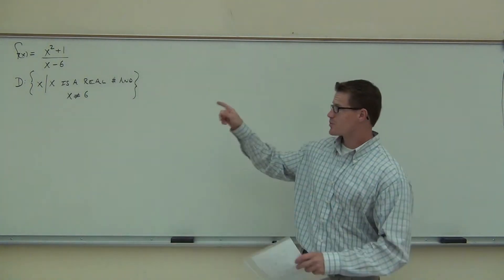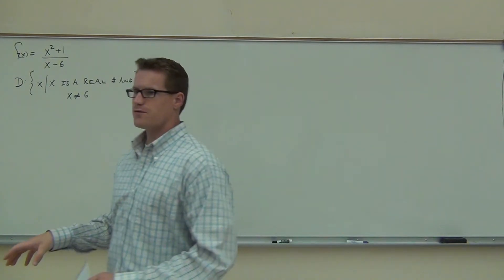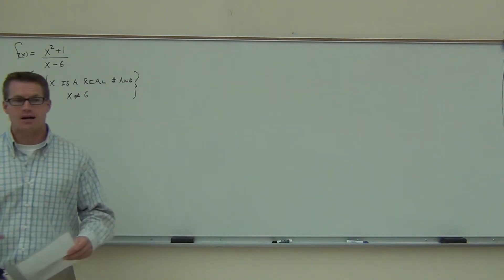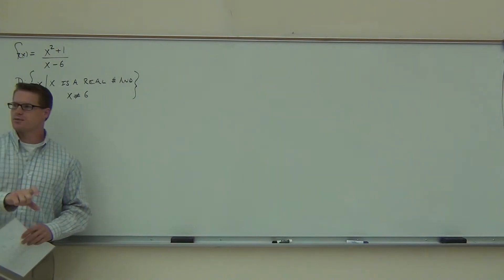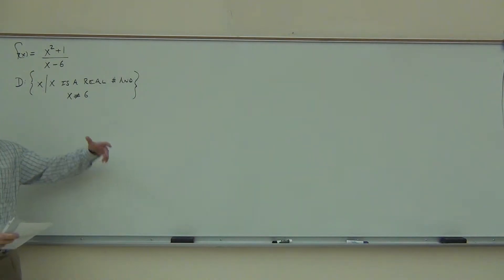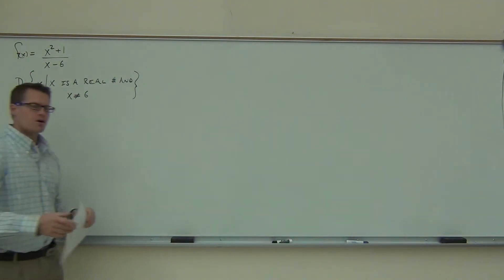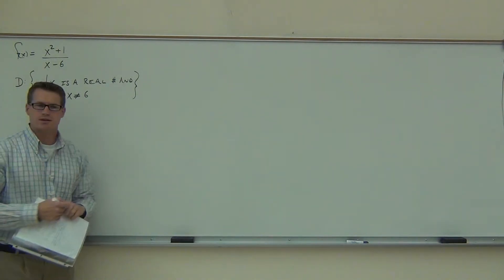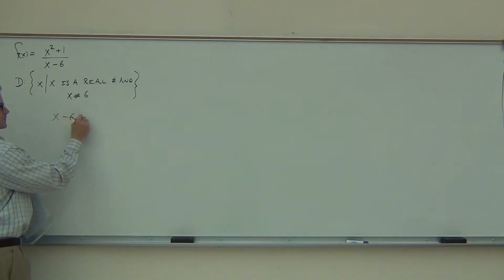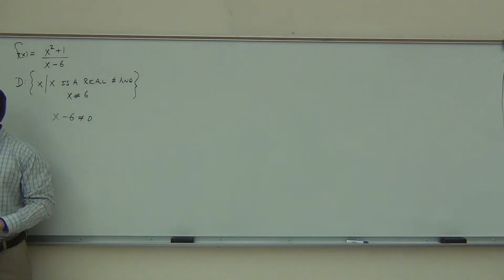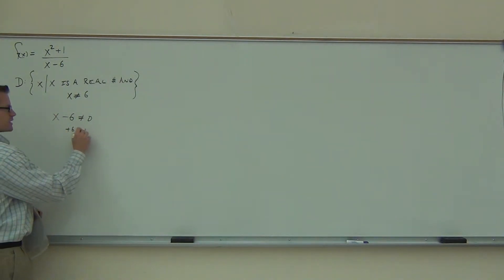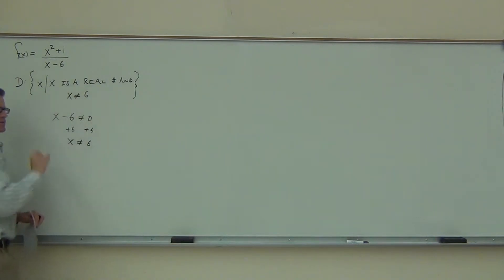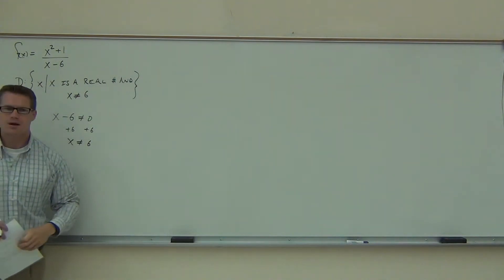If you remember from yesterday, we said that domain is really all the numbers that I can plug into a function and get something valid out — pretty much anything that's not undefined. There's one thing with fractions that we cannot have, and that's zero on the denominator. When we look at the problem for domain, we really don't care about numerators — we look right at the denominators. Our denominator cannot be equal to zero. So set your denominator not equal to zero and solve it.